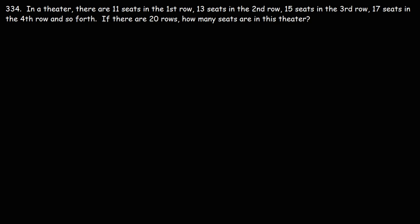Number 334. In a theater, there are 11 seats in the first row, 13 seats in the second row, 15 seats in the third row, 17 seats in the fourth row, and so forth. If there are 20 rows, how many seats are in this theater?